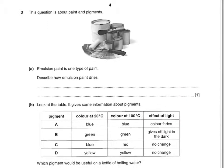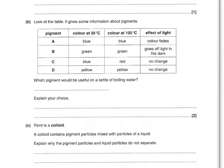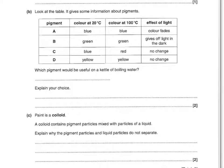There's a question about paint. Describe how emulsion paint dries — only one mark — all you have to say is that the solvent evaporates, or since the solvent in emulsion paint is water, you could say the water evaporates. Next question: which pigment would be useful on a kettle of boiling water? The choice is pigment C, because it's a thermochromic pigment — that's your first mark, or you could say it changes colour when temperature increases. The second mark is saying it can act as a warning as the kettle heats up, or indicate when the water is boiling or hot.